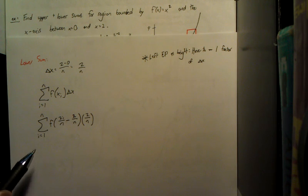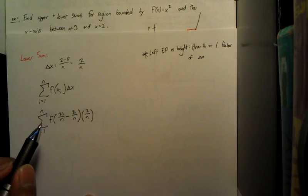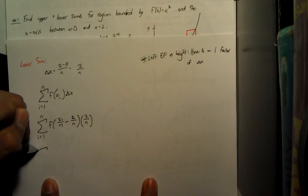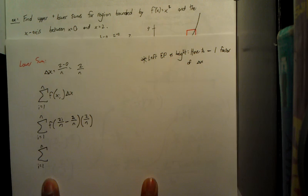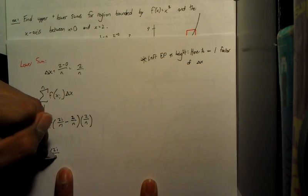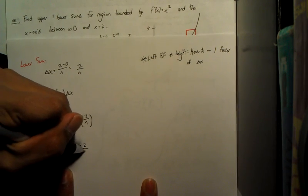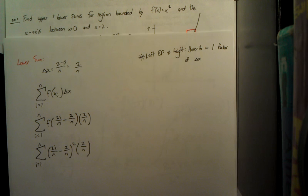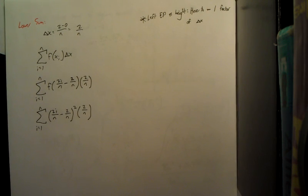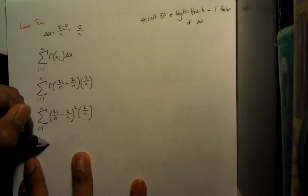Continuing with the problem, now that we have our new input, we plug that into our original equation x squared and we're given summation 2i over n minus 2 over n squared times our change in x.